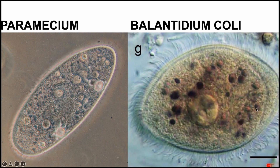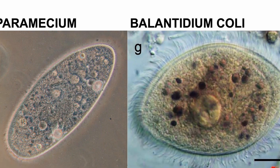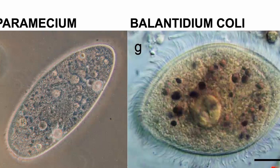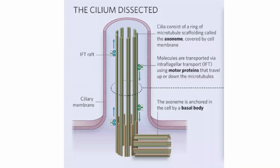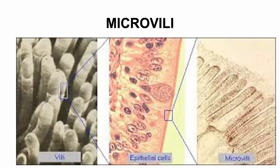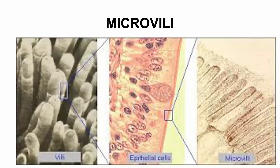This is a bacterium — paramecium — with cilia. There is also a ciliated parasite called Balantidium coli shown here. Would anyone like to do an experiment looking at pig feces under the microscope to see if they can find this parasite? That would actually be fun. The cilium in terms of protein structure is made of microtubules — microtubules form the cilia, microtubules form the flagellum — and there are motor proteins involved.